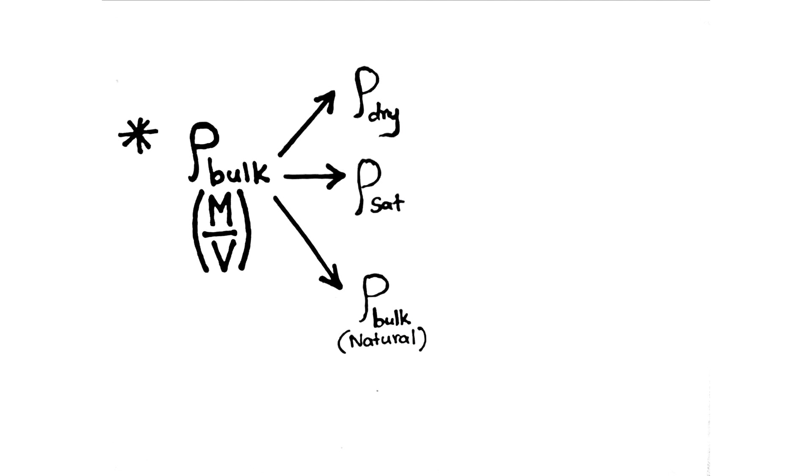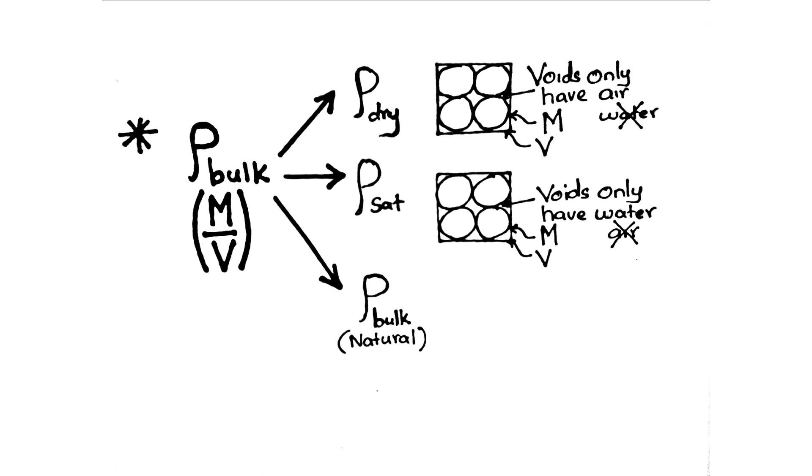Bulk density is categorized as dry density, saturated density, and natural or common bulk density. When measuring dry density, voids only have air, no water, i.e., oven-dry condition. When measuring saturated density, voids only have water, i.e., soil below the water table.